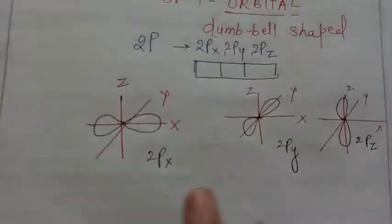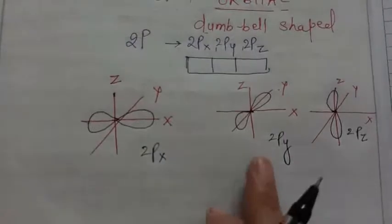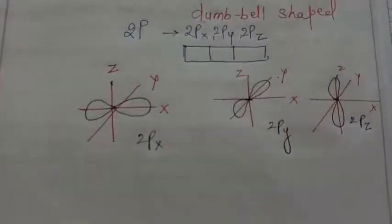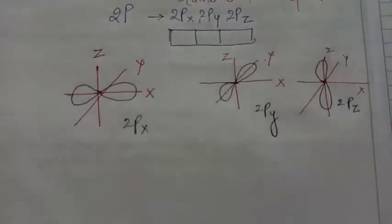Now similarly the shapes of 3px, 3py, 3pz will be drawn similarly, only the size of the dumbbell will increase.